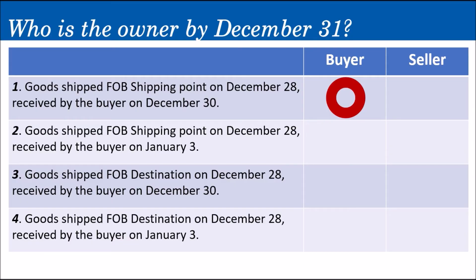Number two: goods shipped FOB Shipping Point on December 28, received by the buyer on January 3. The seller shipped it December 28 and the buyer received it January 3. That means by December 31, it's still in transit. Under FOB Shipping Point, while the merchandise is in transit, ownership already belongs to the buyer. So by December 31 in scenario number two, it already belongs to the buyer.